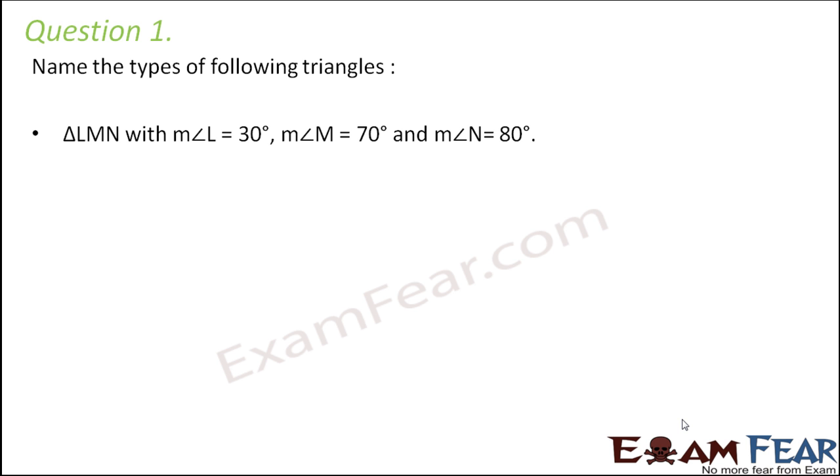Triangle L, M, N with angle L. This M angle L means measure of angle L is equal to 30 degrees. Measure of angle M is equal to 70 degrees and measure of angle N is equal to 80 degrees. So let us try to draw a rough sketch of this triangle. So angle L is 30 degrees. So first we draw angle L. Let's say this is 30 degrees and this is angle L.